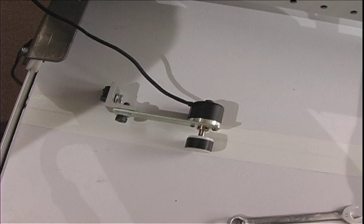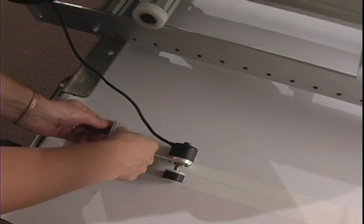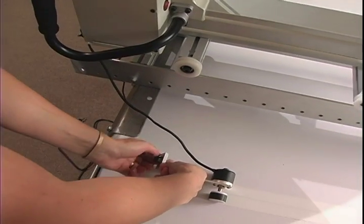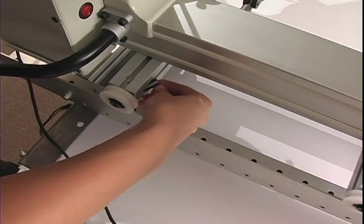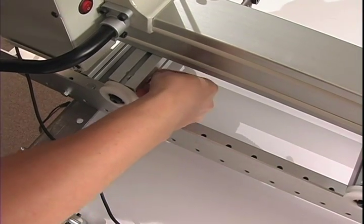Begin by locating the stitch regulator on the left side of your Innova sewing machine. Remove the rounded T-nut from the end of the regulator mount. Insert the T-nut into the slotted rear wheel beam as shown here.